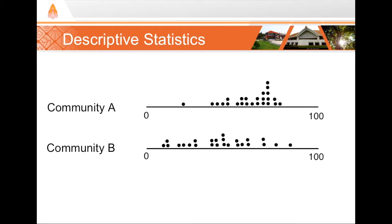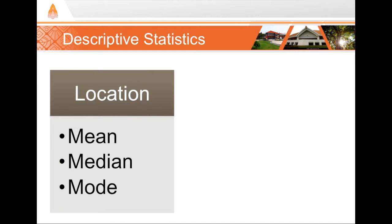To describe data's location, we can use its mean, median, and mode. We call these measures of central tendency.